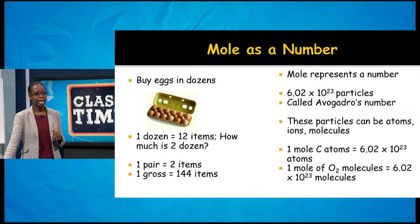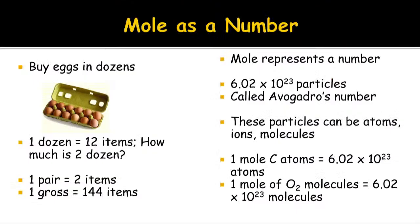The mole represents — and this is a very big number — 6.02 times 10 to the 23rd power particles. That number is called Avogadro's number, named after the gentleman who worked on this concept, Amadeo Avogadro. These particles can be atoms, ions, or molecules — if I have a mole of atoms, ions, or molecules, it would be 6.02×10²³. This is a constant value, also called Avogadro's constant.